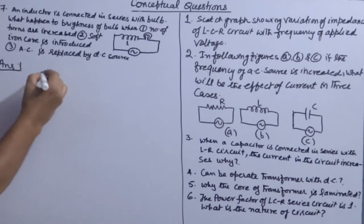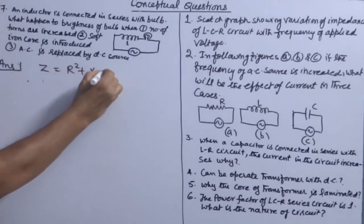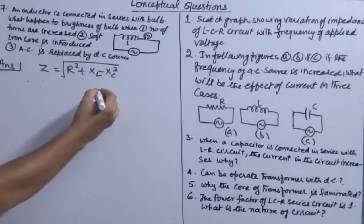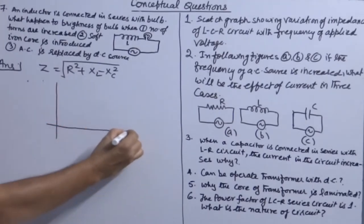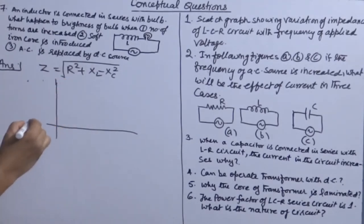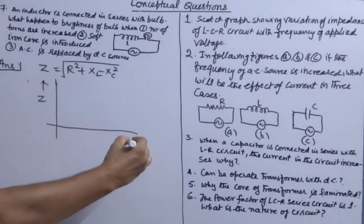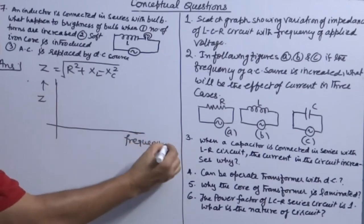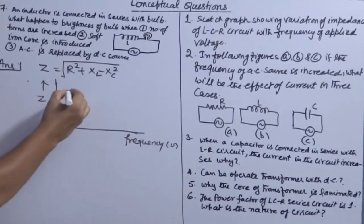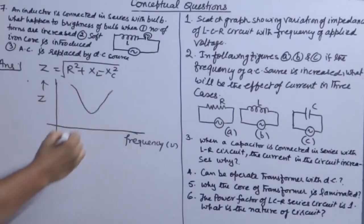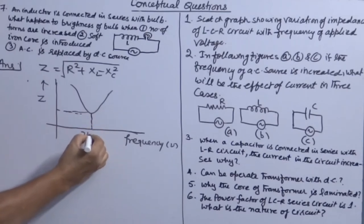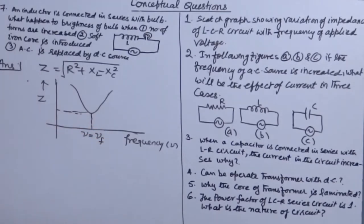We know that Z is equal to square root of R² + (XL - XC)². So when you plot a graph of impedance versus frequency, the graph will come like this. Because when one increases, the other decreases, and the minimum position is obtained when frequency is equal to resonant frequency.